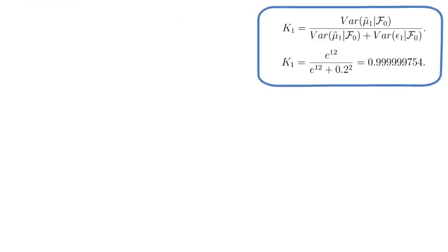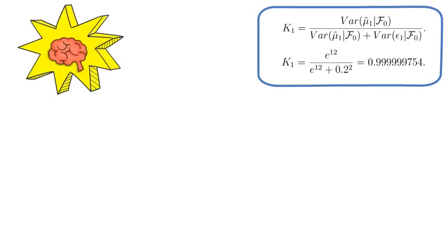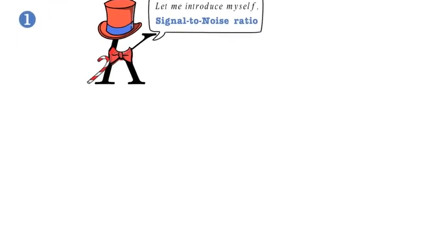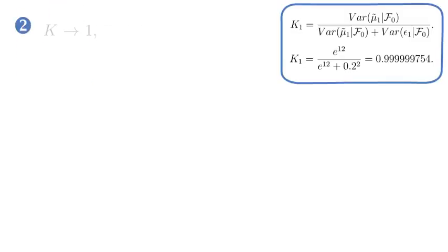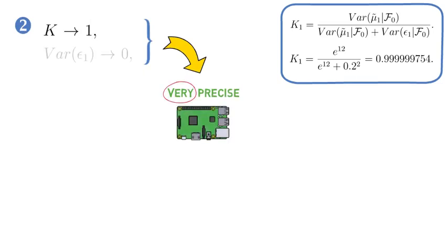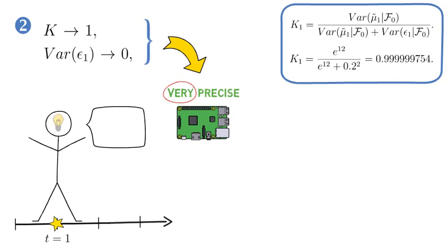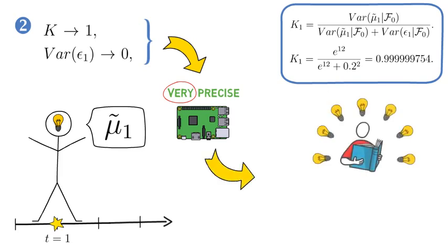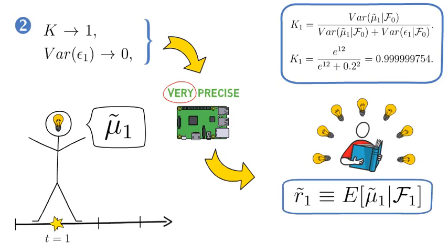So let's tease out some intuition from these last two equations. First, K is also called the signal-to-noise ratio. Second, as K converges to 1 or approaches 1, that implies that the sensor is very precise as the variance of ε_1 would approach 0. So the investor would learn in t equals 1 the correct value of the ex-ante expected risk premium μ̃_1. And I call that perfect learning. It also implies that the realized excess return in 1 would be the expected value of μ̃_1 conditional on F_1. Perfect learning because perfect trust in the sensor.